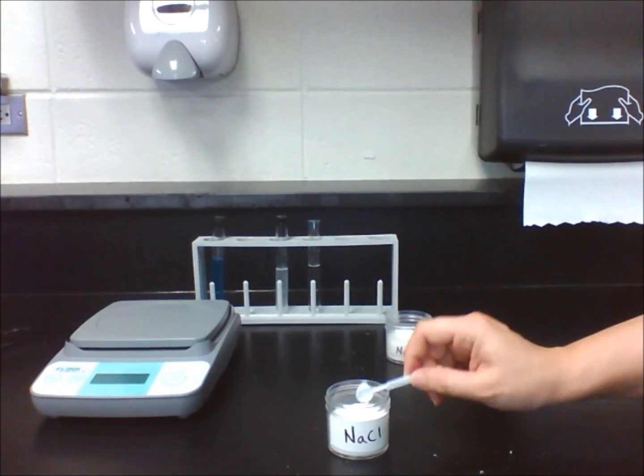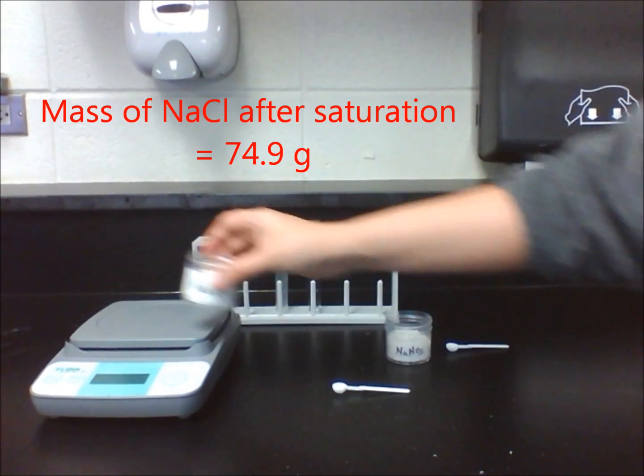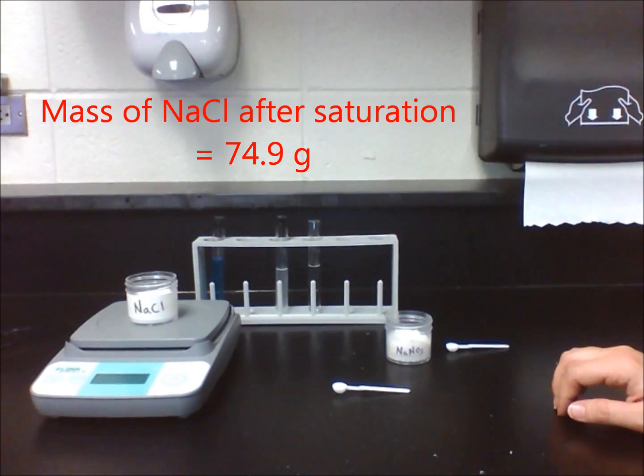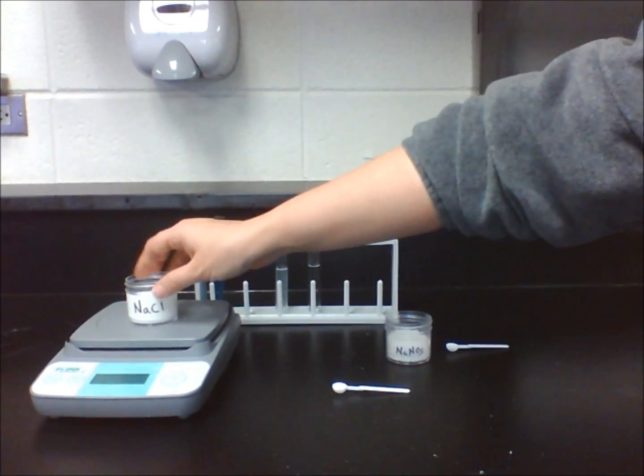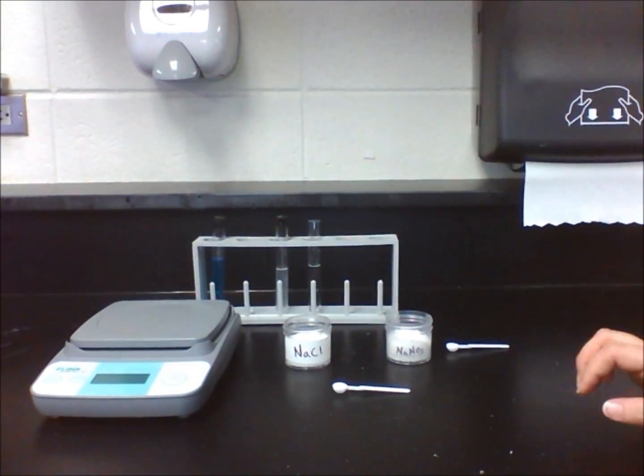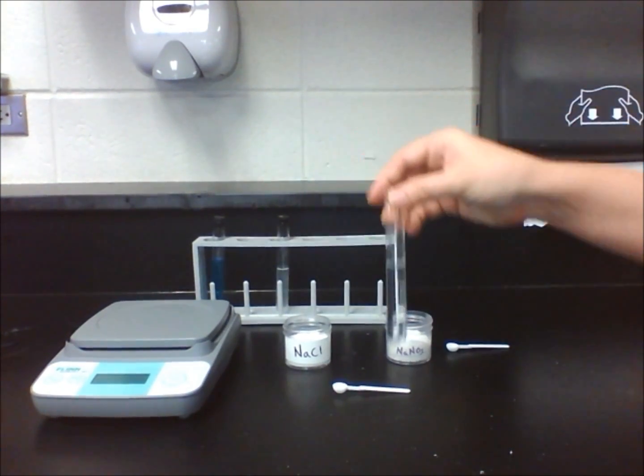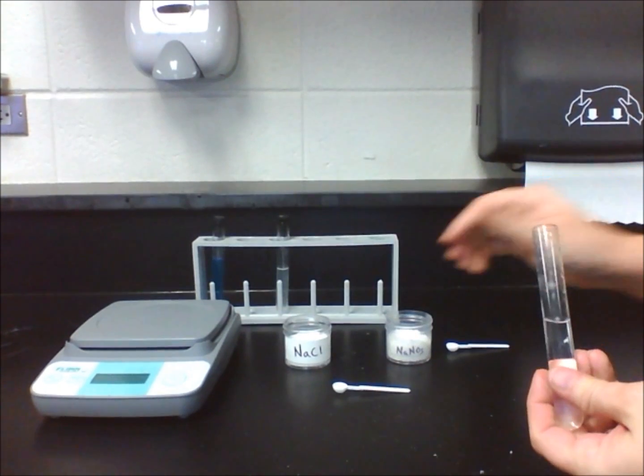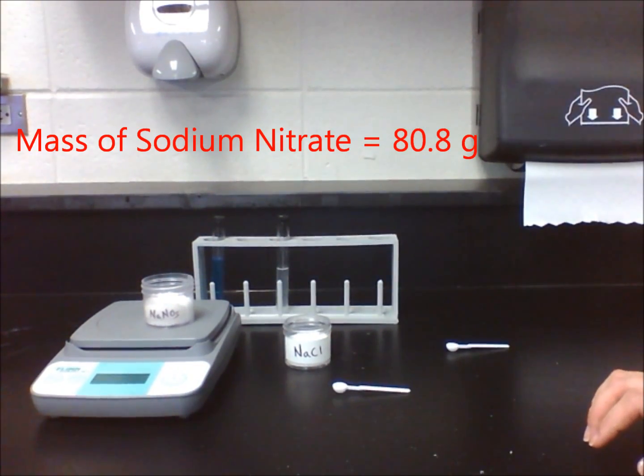Let's test the solubility of sodium nitrate. Fill a test tube with 10 mL of water. Mass the jar of sodium nitrate on a scale and record your results. Place one scoop of sodium nitrate in the test tube. Place the stopper in the test tube and shake 40 times again.